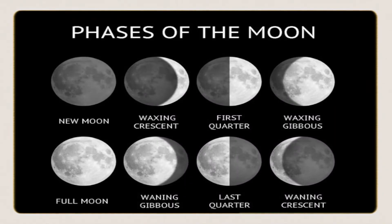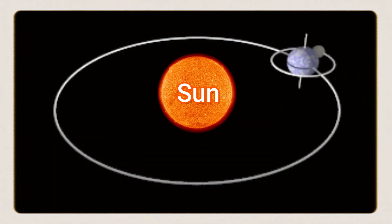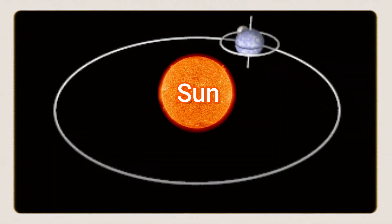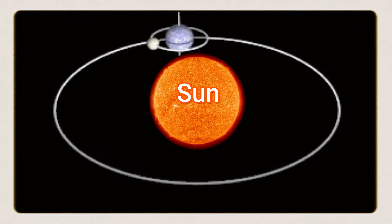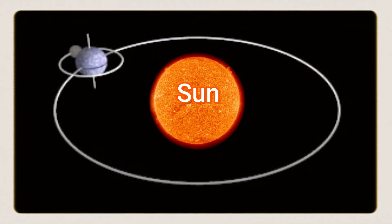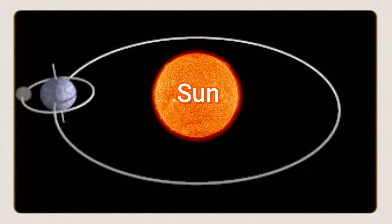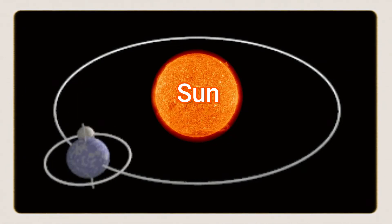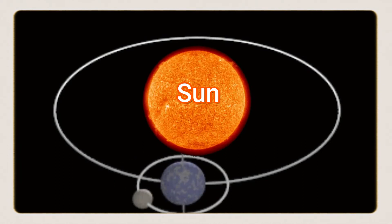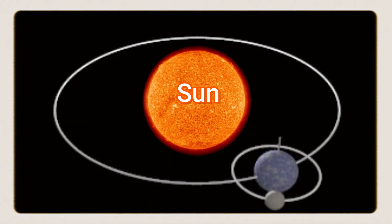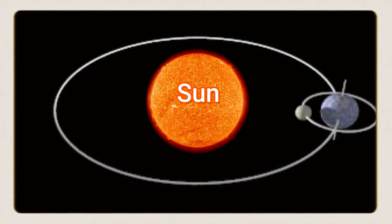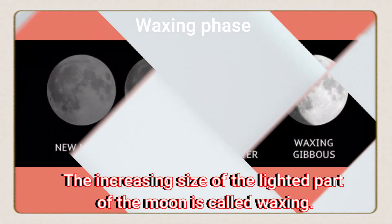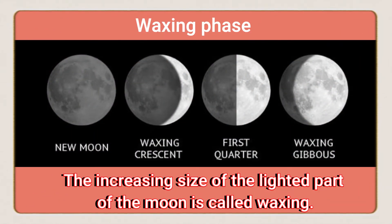Around once per month, the phases of the moon make a complete cycle. As the moon orbits or circles the earth, the phase changes. To complete the cycle, we see the waxing phase and the waning phase. Let's know first about the waxing phase. Waxing phase begins with the new moon.